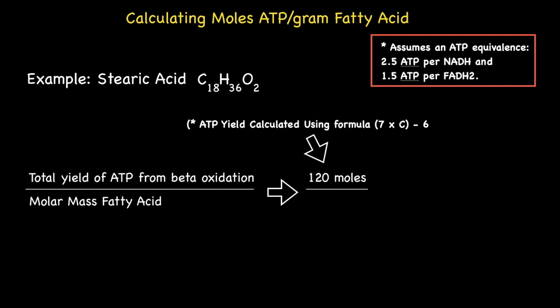Stearic acid has a molar mass of 284.48 grams. If you do not know how to calculate the molar mass of a compound, then I suggest you look up my video titled Molar Mass Formula Mass Calculations — a link is placed within the top right-hand corner for your convenience. If we now divide our 120 ATPs by the molar mass of stearic acid, 284.48, this gives us 0.42 moles of ATP per gram of stearic acid.